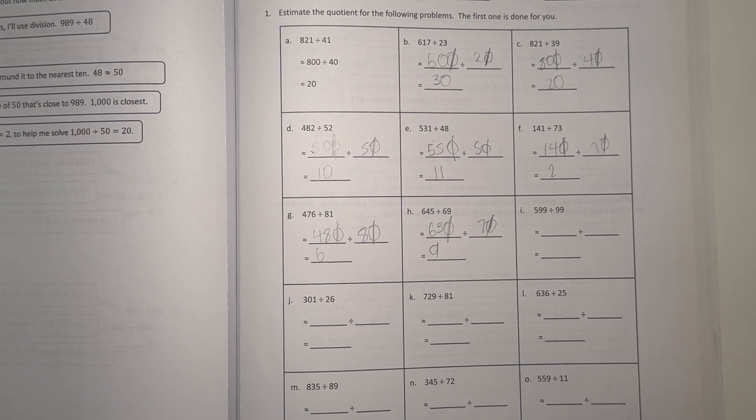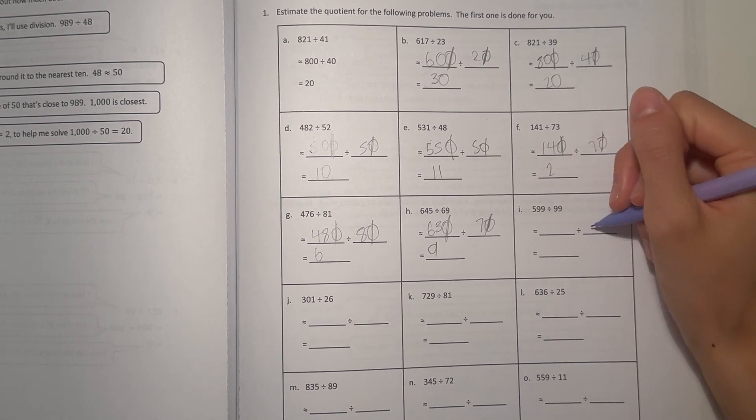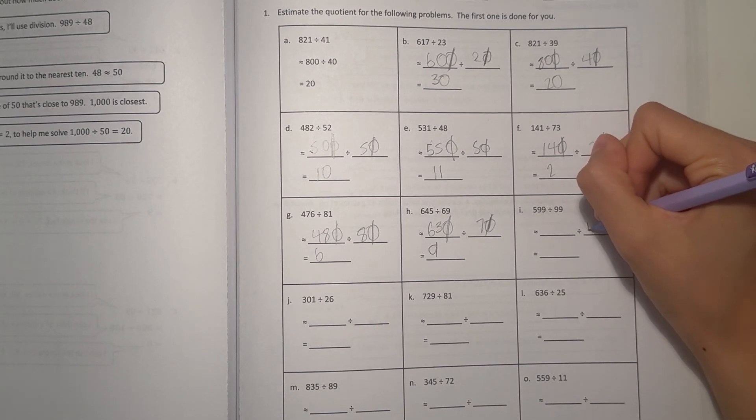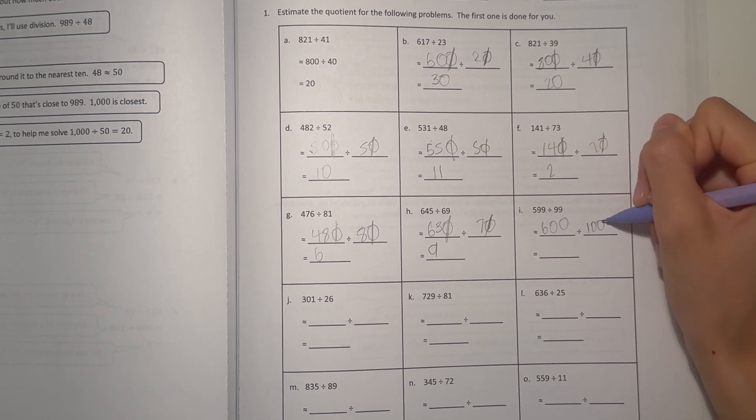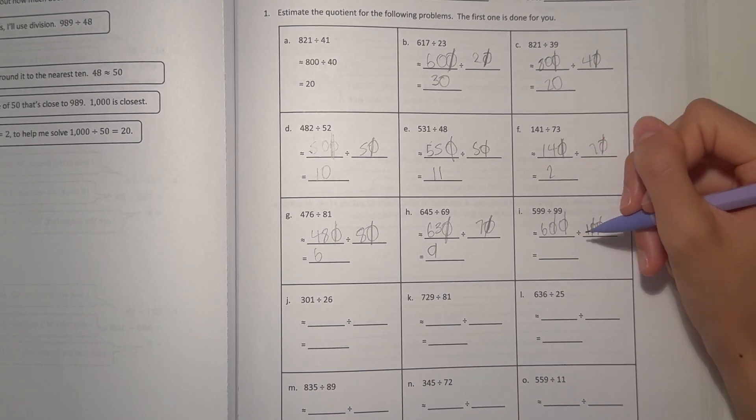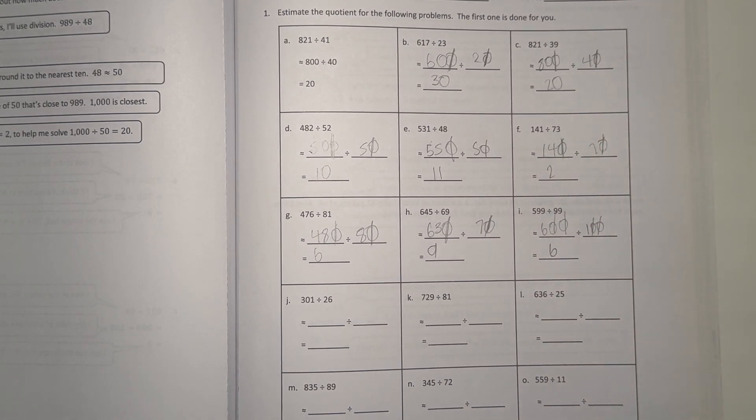All right, and I, 99 can round to 100, and 599 can round to 600. Cross off the zeros. 6 divided by 1 is 6, so that's our estimate.